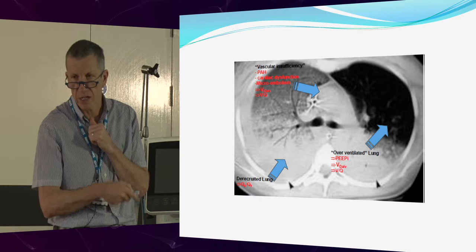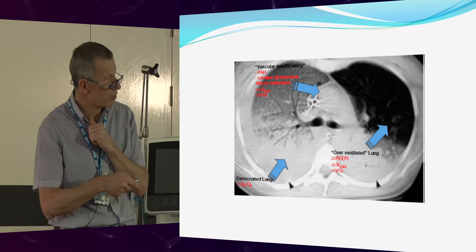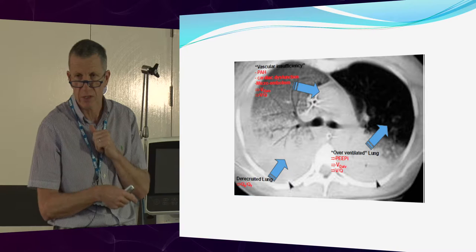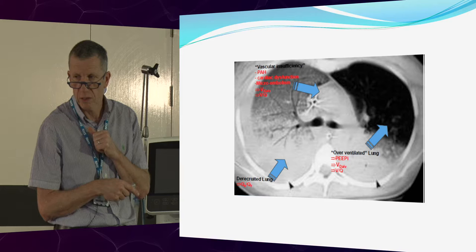Different parts of the lung will have different compliance curves. We want to have our best guess of ventilating people on that steep bit of the compliance curve where you get the biggest change in volume for the smallest change in pressure.